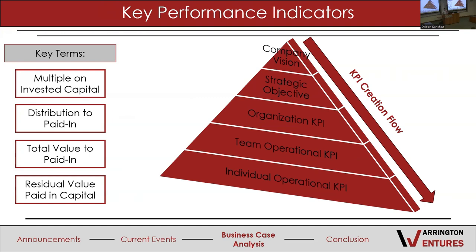Multiple on invested capital, or MOIC, is simply the present value or expected future value divided by how much capital was inserted into the company. Where it fits in the KPI pyramid depends on whether you're using present or future value. If it's the future value, it aligns with the strategic objective level — since VC and private equity funds typically plan to hold a company for only five to ten years, their investment thesis becomes the company vision and works down from there.